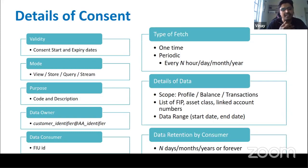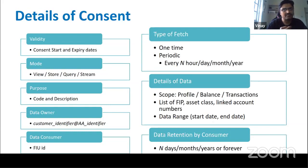Consent details include: validity period (start and expiry), mode (viewing or storing data), purpose (PFM, credit monitoring, wealth advisory, lending, etc.), data owner identifier, data consumer (e.g., HDFC Bank, HDFC Securities, Kotak Bank), fetch nature (one-time or recurring — hourly, daily, monthly), data type (profile, balance, transactions — including account number, address, transaction history), which accounts are being shared, the date range, and data retention period. This covers all aspects of transparency.